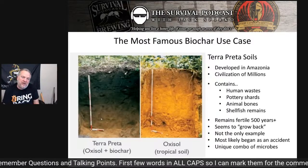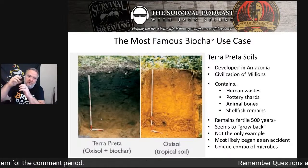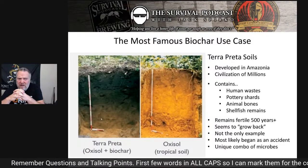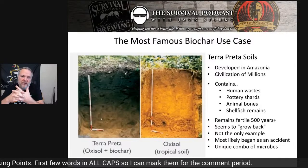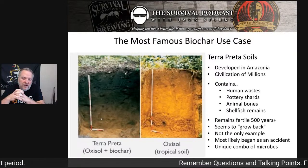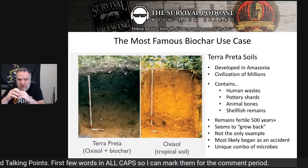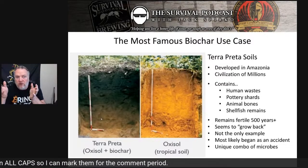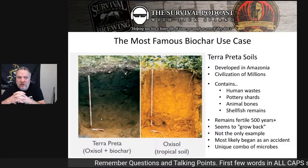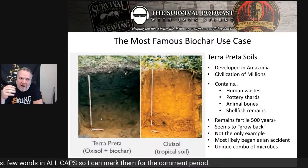One thing we'll talk about is cation exchange — basically a number that says how good the soil is at holding and exchanging nutrient with plants. A lot of our farmland in the United States has a cation exchange of like two to six. Six is doing pretty good right now. Native prairie soils when we first got here — maintained by Native Americans and bison — had cation exchanges somewhere in the 20s to 30s. Pure organic mass, like full-on compost, will have a cation exchange of somewhere between 200 and 400. Some of the soils of terra preta tested after 500-plus years of not being touched have cation exchange around 200.